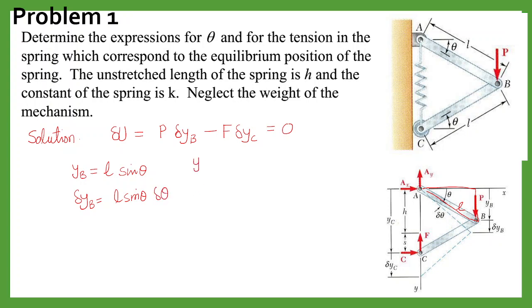Similarly, YC is equal to 2L sin theta because you can take this triangle. This is L sin theta. When you add both you will get 2L sin theta. Then delta YC will be equal to 2L cos theta delta theta.